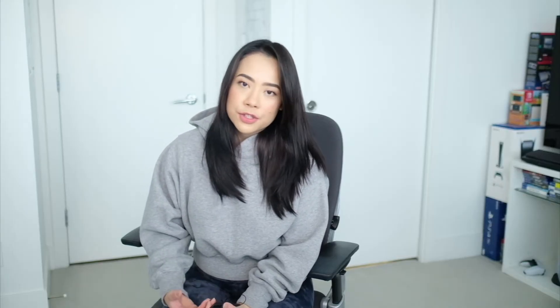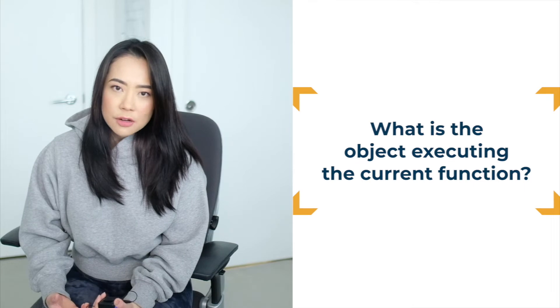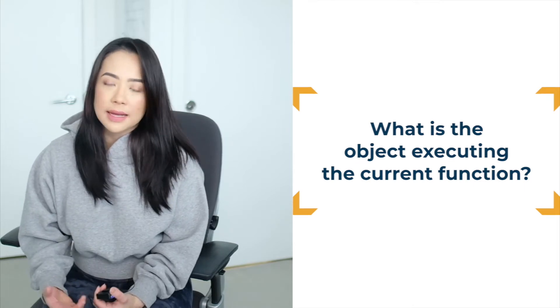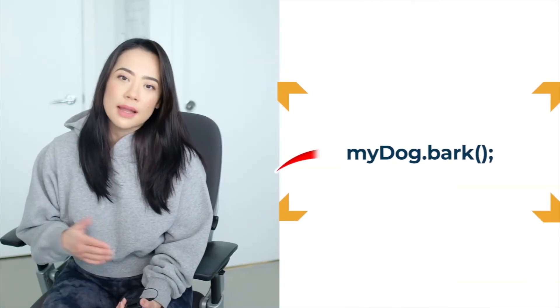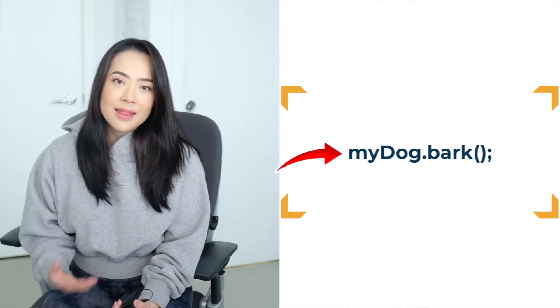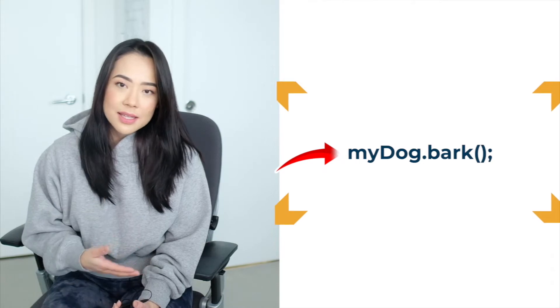When trying to figure out what the keyword this is referring to, the question you really need to ask yourself is: what is the object executing the current function? A very general rule of thumb is just to look at the object on the left of the dot. Most of the time, that's what the keyword this is referring to. There are several exceptions though, and we're going to go over them in a minute.